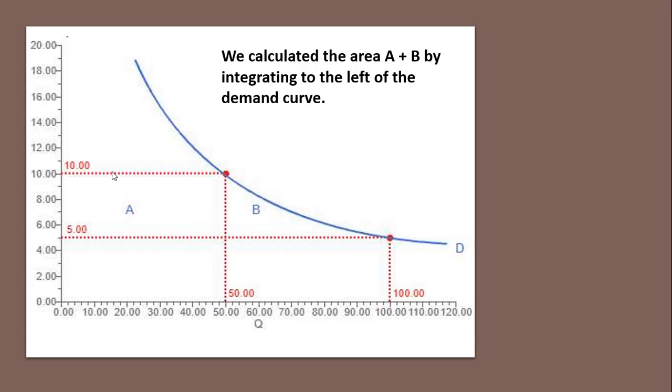We're going to get an increase in consumer surplus on these first 50 units of $5 times 50. So that'll be this area. And then the increase in consumer surplus over this area here is going to just be area B. So what we did, was we calculated the area A plus B by integrating to the left of the demand curve. So we integrated using the prices here for our demand function.